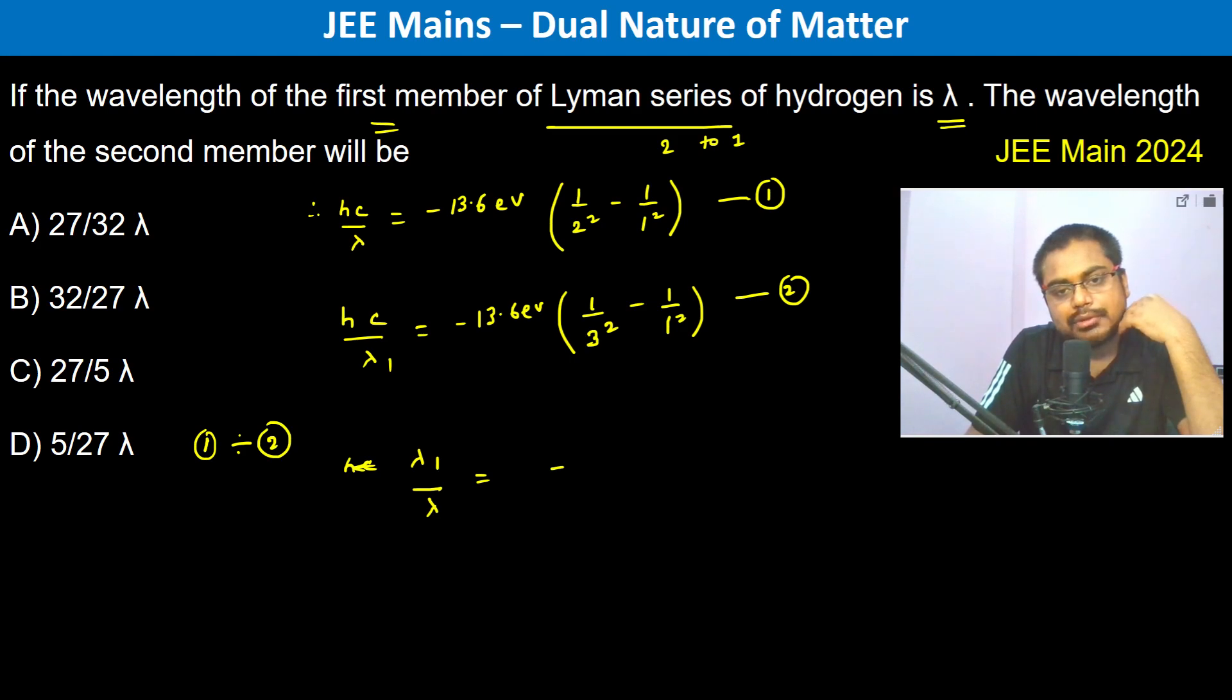This was 1 by 4 minus 1 so this is minus 3 by 4, so therefore 3 by 4 divided by it is 8 by 9. So this goes as 9 into 3 divided by 8 into 4 which is 27 divided by 32.